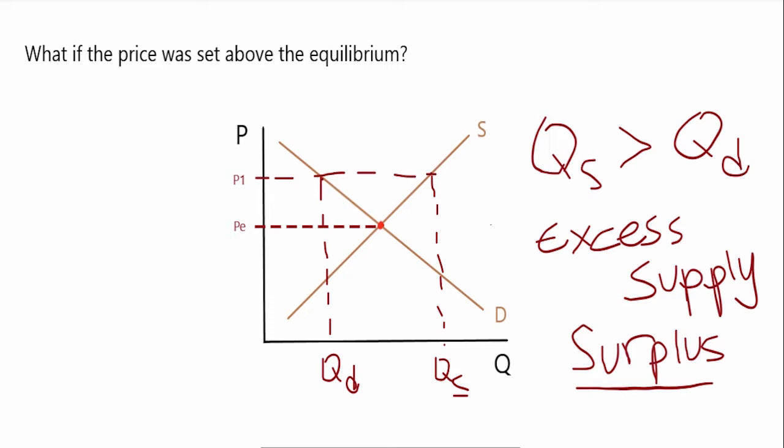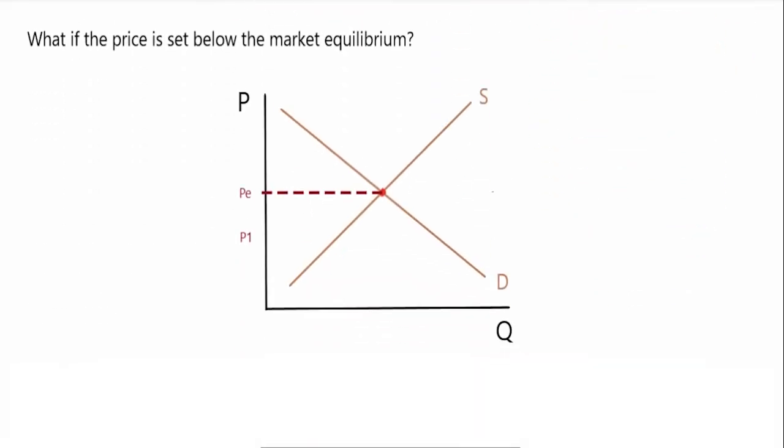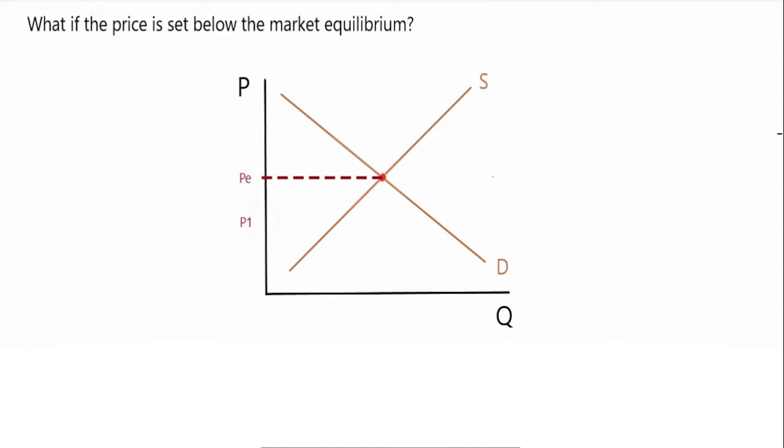Now say, what if the price is set below the market equilibrium? So as you can see, our P1 is over here, it's below your equilibrium price. What's going to happen? Well, let's extend our graph here. We have here our quantity demanded. And over here, you have quantity supplied. So it is evident that your quantity supplied is less than your quantity demanded.